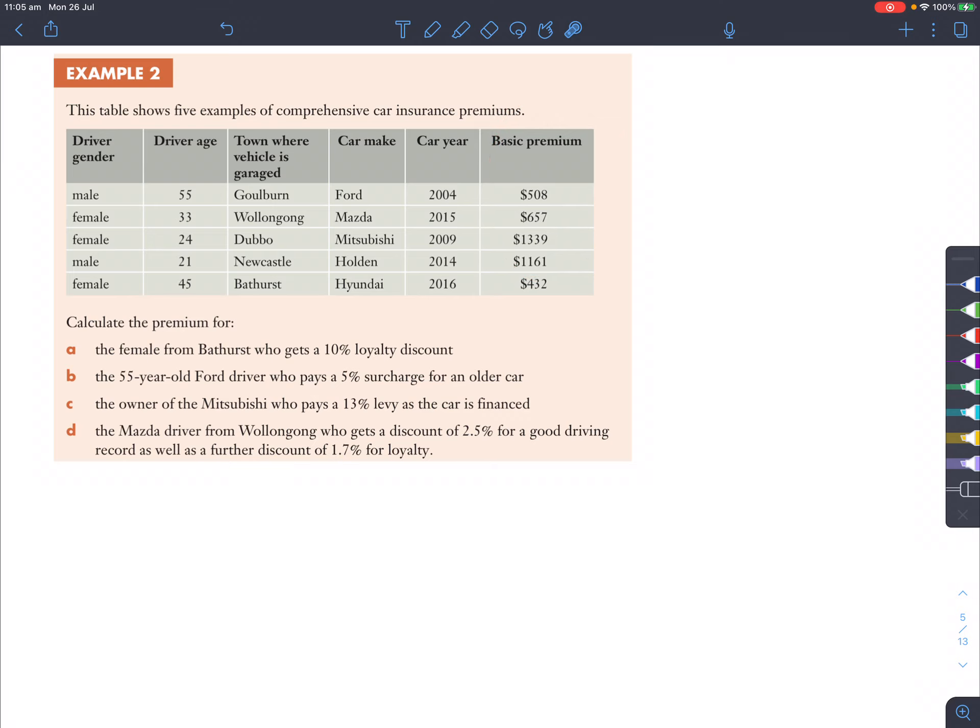So we're calculating, first of all, for part A, a premium for the female from Bathurst who gets a 10% loyalty discount. So it's 10% loyalty discount, then that means that we're only paying, or she's only paying, 90% of it, because she gets a discount. So let's find that out. She's a female from Bathurst, and that's right here, and she has to pay $432 normally, but because of that discount, she pays $432 times 90% instead, and that will give $388.80. So she pays it cheaper.